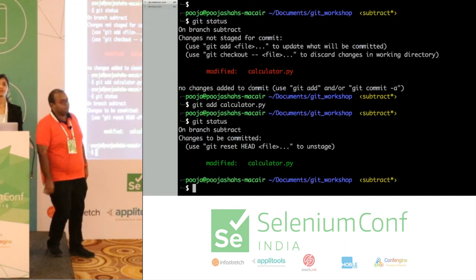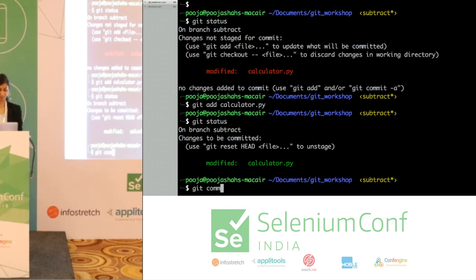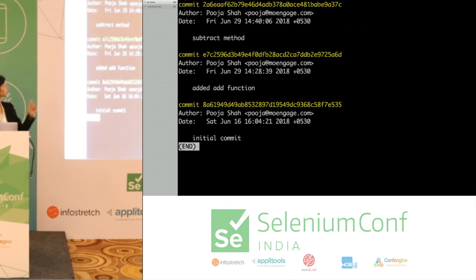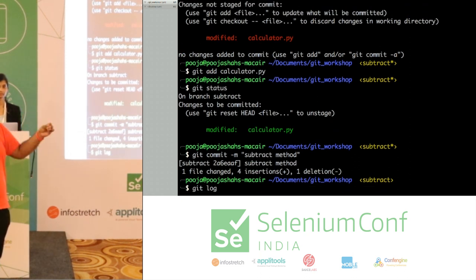So let's move ahead — commitment is important. We say commit this file: git commit -m 'subtract method.' Now how do I see what happened? Git log. I see the third commit also came — subtract one on top. Don't think of add in terms of adding a file; think of it in terms of adding a change — not the file, but the change.